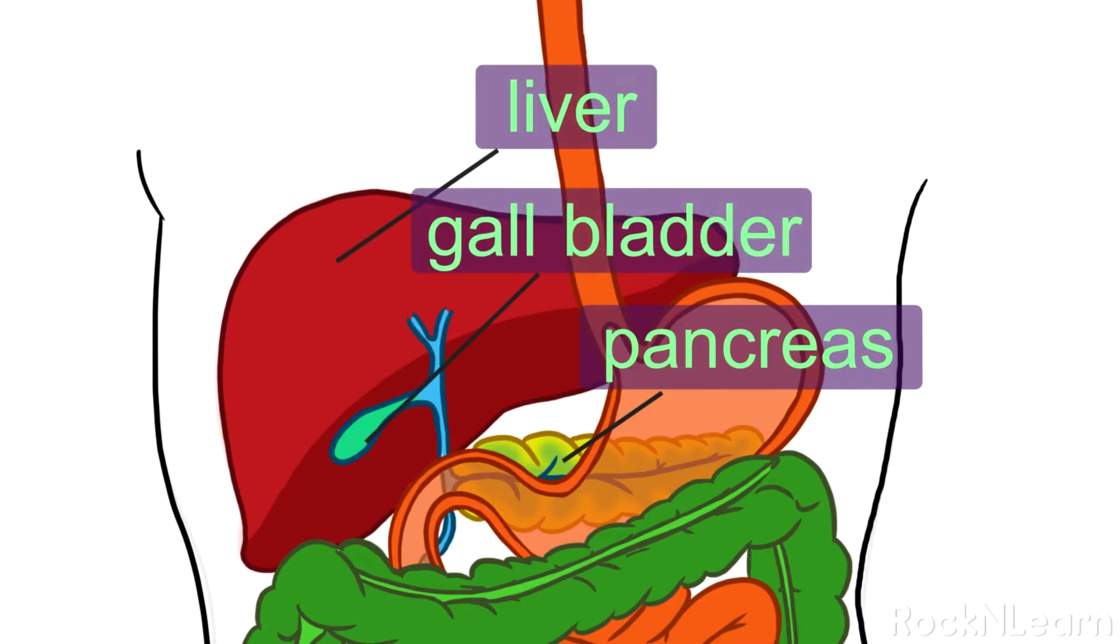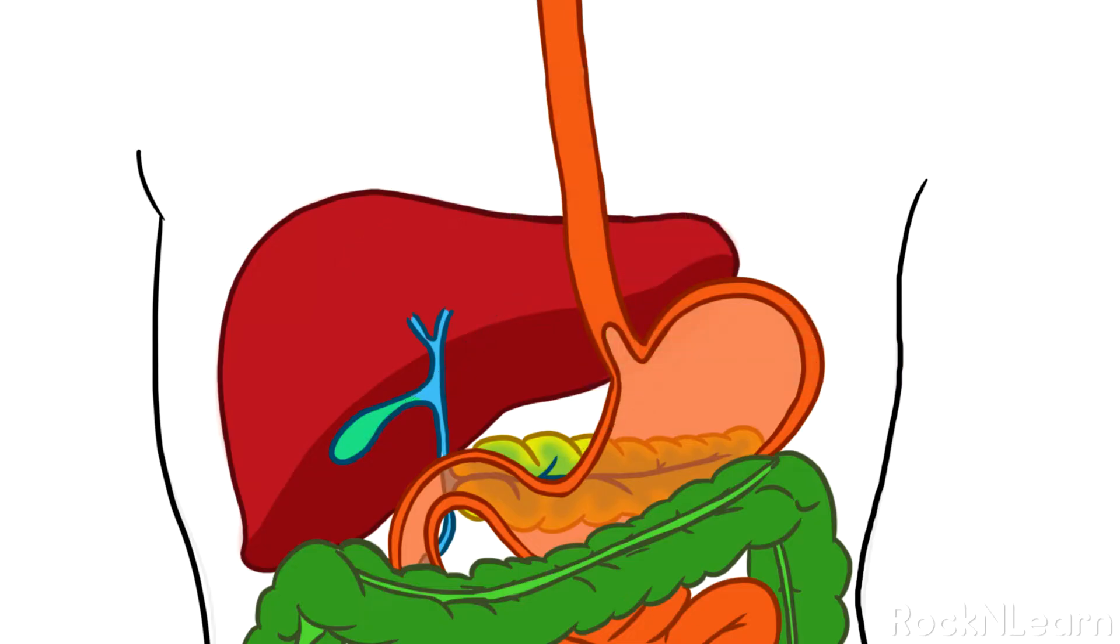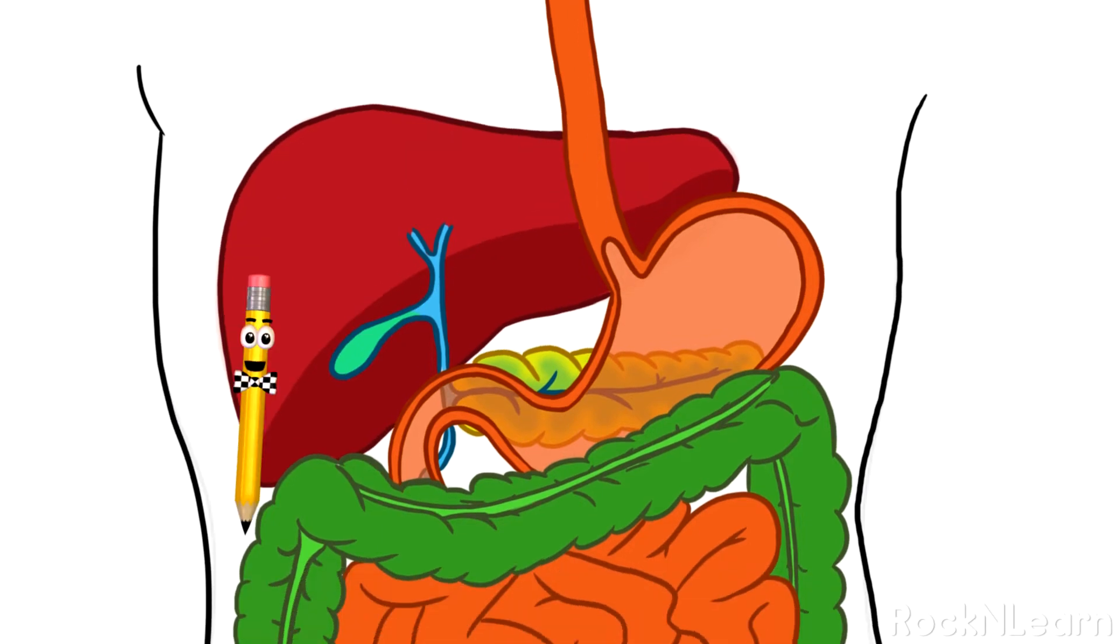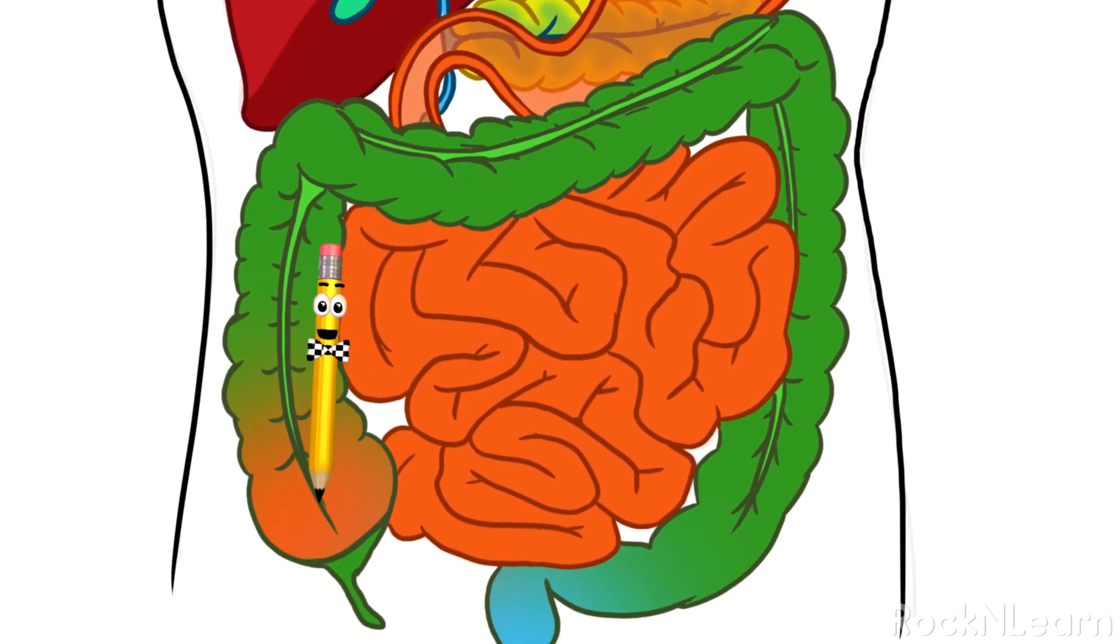Those organs send different fluids to the first part of the small intestine. These juices help to digest food and allow the body to absorb nutrients. The pancreas makes enzymes that help the body digest fats and protein. A fluid from the liver, called bile, helps to absorb fats into the bloodstream. And the gallbladder serves as a warehouse for bile, storing it until the body needs it. Food may spend as long as 4 hours in the small intestine.